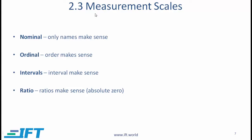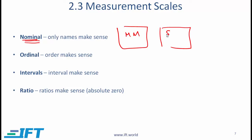Let us now talk about four different measurement scales. A nominal scale is one where we essentially only use names. For example, different kinds of mutual funds — a money market mutual fund, a growth stock fund, or a value stock fund. Notice that these three different funds are not better or worse relative to each other; only the names make sense because they identify what sort of fund we are considering.